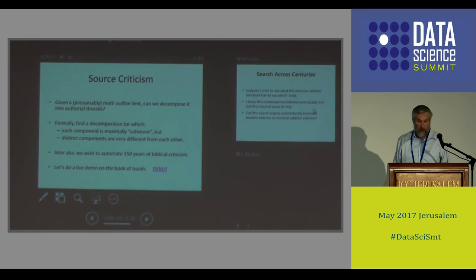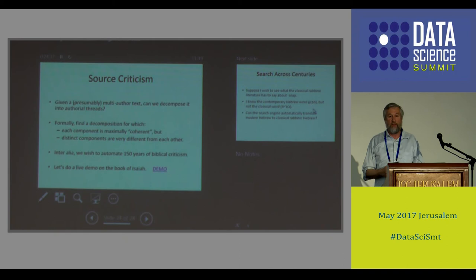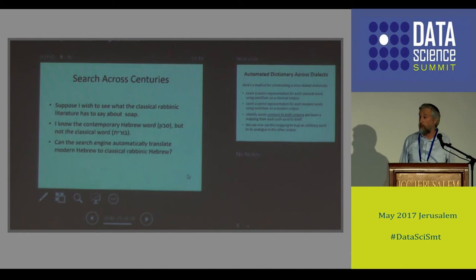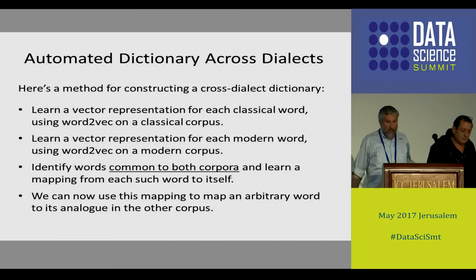That's just one example. You could take any book — it doesn't have to be a biblical book. You can say, I would like you to split this book into three parts, five parts, twelve parts, and it will do it in the optimal way.